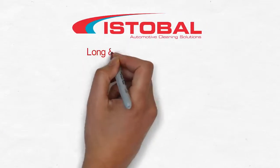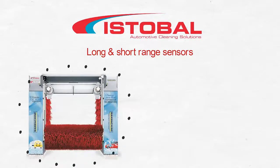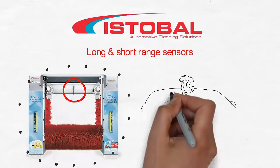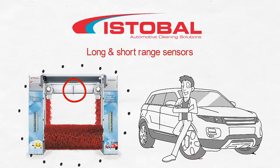Istobal machines use long and short range sensors with extra protection safety ring on dryer, which makes this a completely safe machine for cars even if any malfunction takes place.